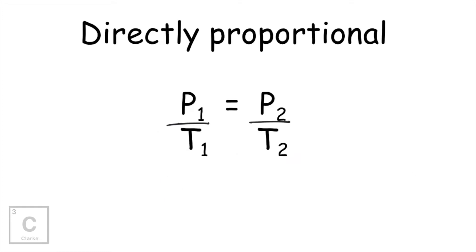So pressure and temperature have a direct proportional relationship — they're directly proportional. As the pressure increases, the temperature is going to increase. If the temperature increases, the pressure has to increase. Those collisions start increasing, so the pressure has to increase.